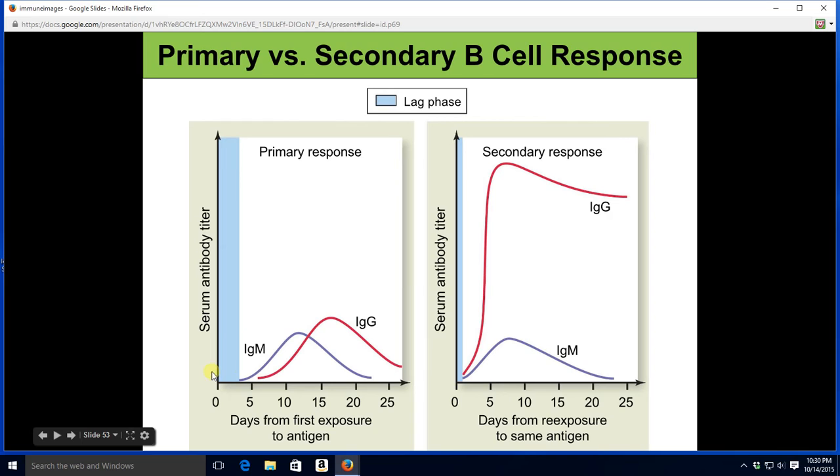So lag phase, doing all that stuff I just mentioned, the antibodies start getting made, antibody levels go up, and then come back down. Liver and kidney help get antibodies out of your circulation.